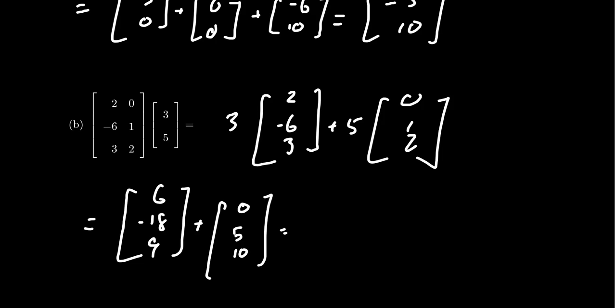So this adds up to be, of course, 6, negative 13, and 19. And this shows us how we can compute the matrix vector product.